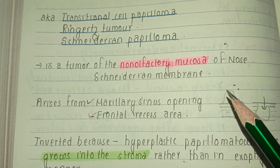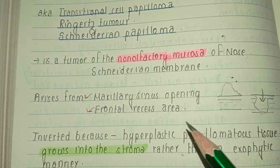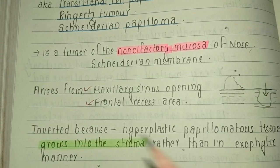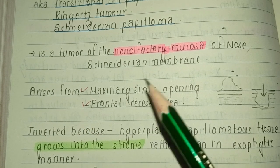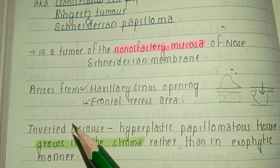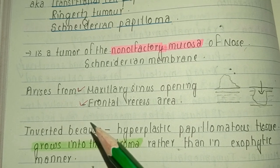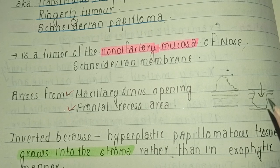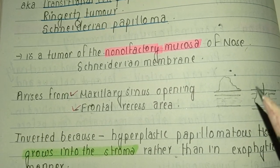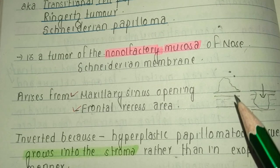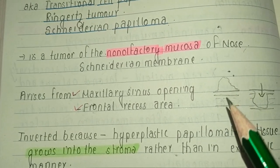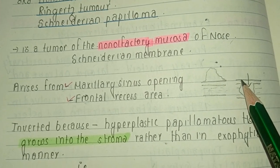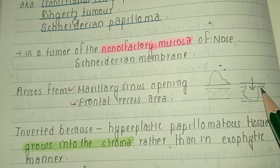Why is it called inverted? It is called inverted because the hyperplastic papillomatous tissue grows into the stroma rather than in an exophytic manner. As we know, this inverted papilloma is a benign but locally aggressive tumor. Normally, growth of any tumor or hyperplastic tissue is towards the upper side in an exophytic manner, but here the inverted papilloma grows into the stroma.